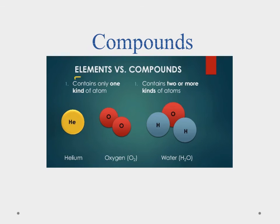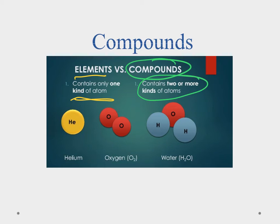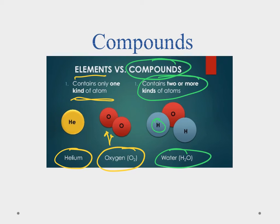We talked about elements having one kind of atom, where all atoms have the same number of protons. We can also make compounds, and compounds have two or more kinds of atoms. For example, helium is a single atom element, oxygen has two atoms but they're the same kind so it's still an element. Water has both hydrogen and oxygen — two different kinds — and that's what makes it a compound.